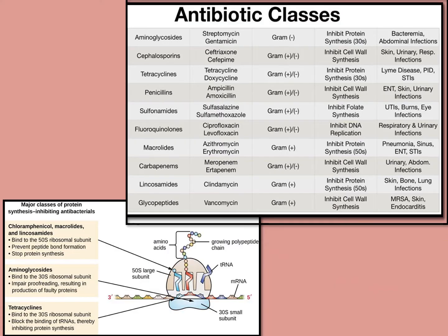This is the table of all antibiotic classes and their mechanism of action. Some inhibit protein synthesis by attacking the 30S or 50S ribosome of bacteria, while penicillin inhibits cell wall synthesis, and sulfadiazine inhibits folic acid production so DNA is not formed. There are different mechanisms — you have to memorize this entire quick table.